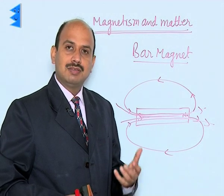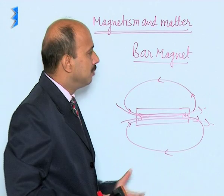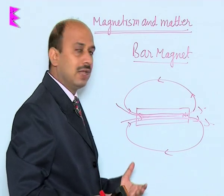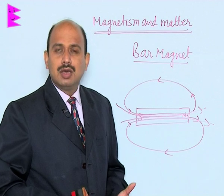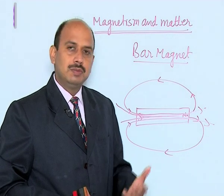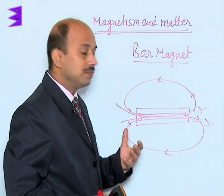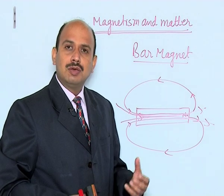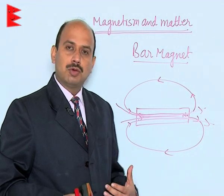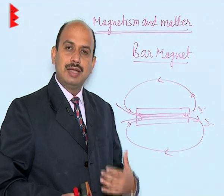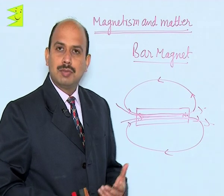If crowded magnetic field lines are found somewhere, it means the magnetic field is very strong. These are the properties of magnetic field lines and some basic characteristics of the bar magnet. Earth also behaves as a magnet — that is why whenever we suspend any magnet, it gets attracted by the north and south poles of the earth's magnetic field and shows the direction.